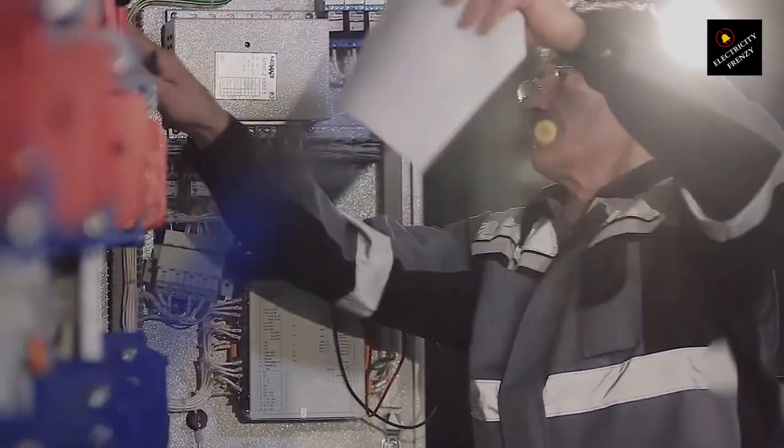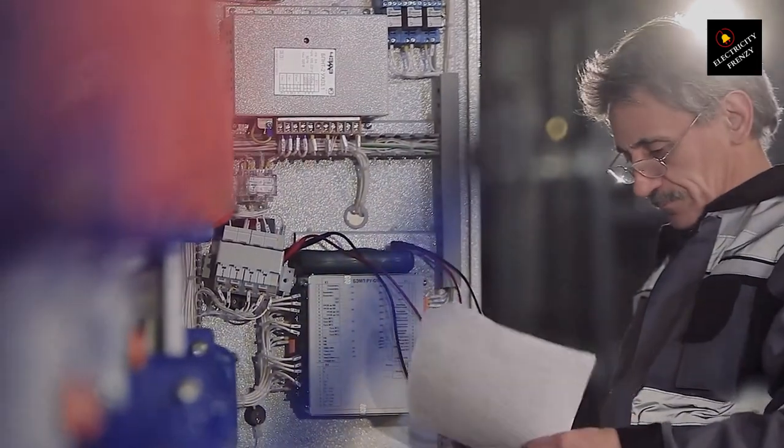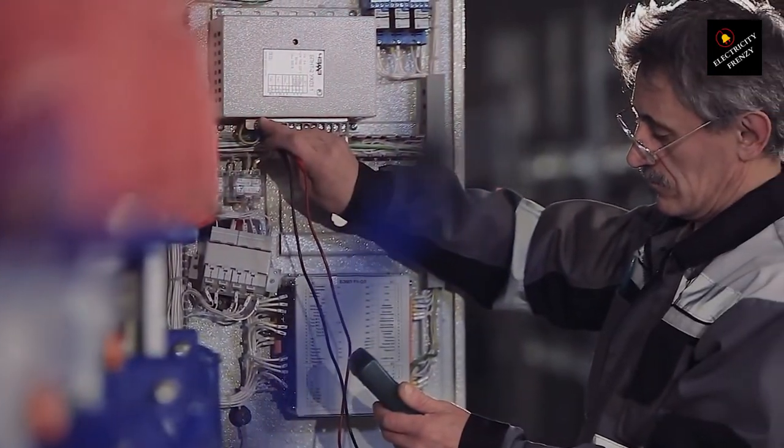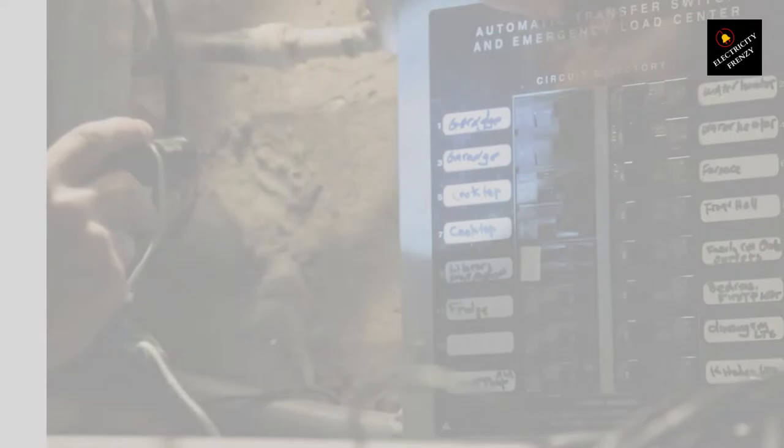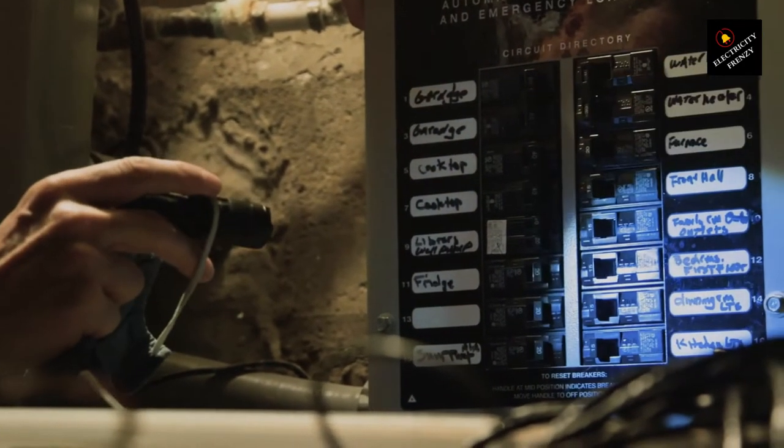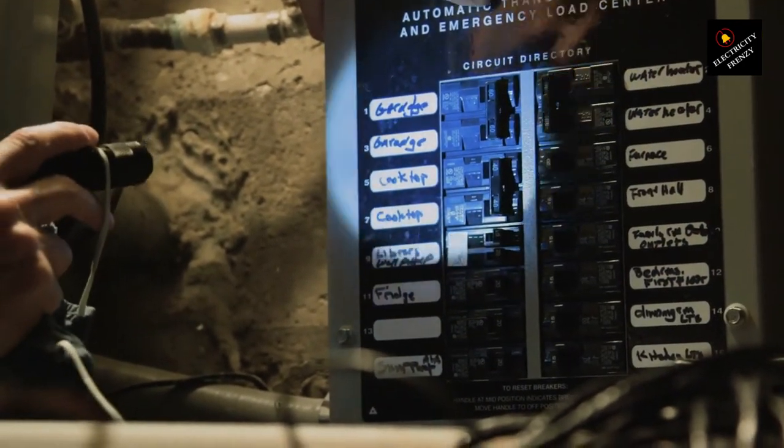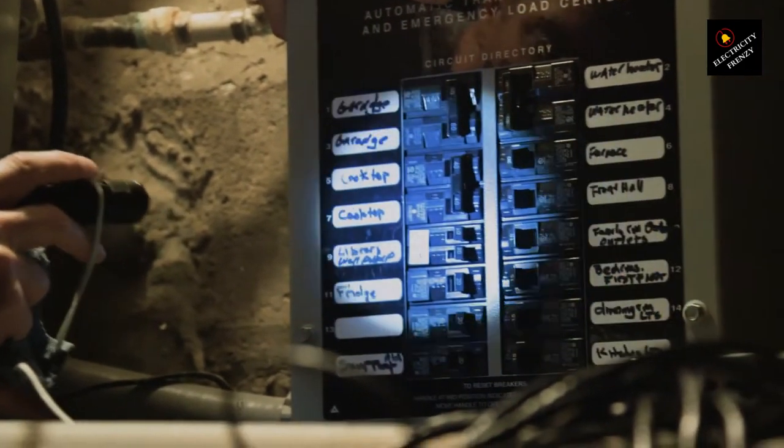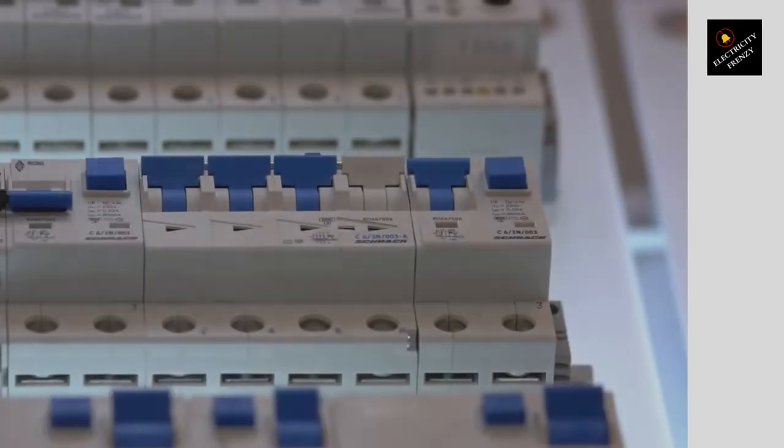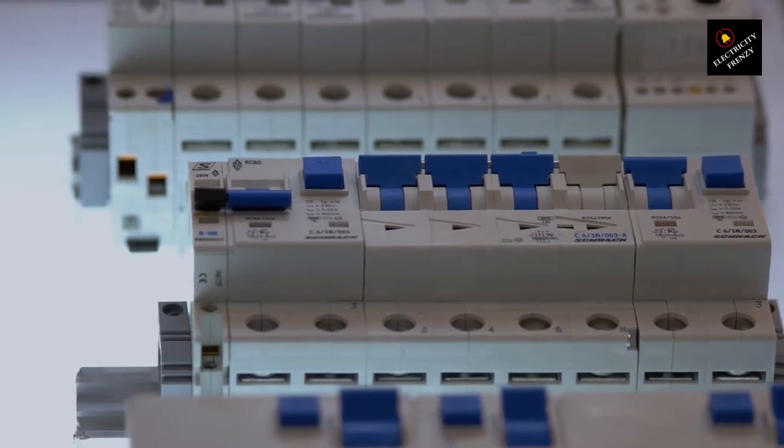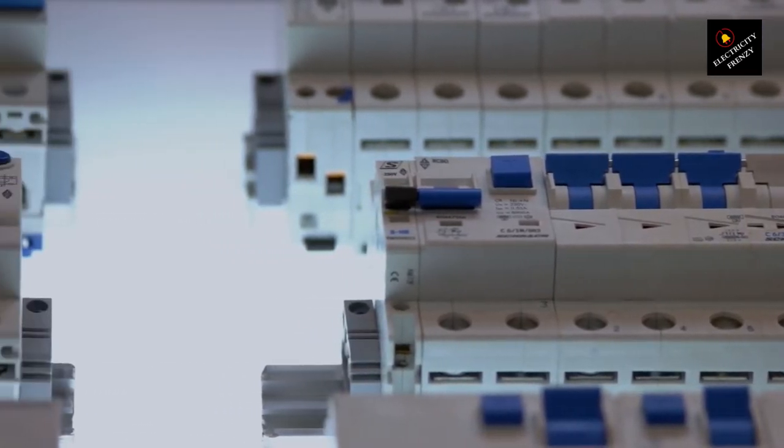Sometimes, the problem lies with a faulty appliance or device. These can cause short circuits or ground faults, resulting in a tripped breaker. So, here's what you need to do: disconnect all the devices from the circuit and reset the breaker. Then, reconnect them one by one. If the breaker trips again, you've found the culprit. It's time to replace or repair that faulty appliance.